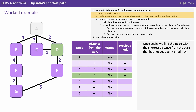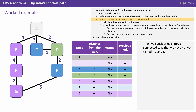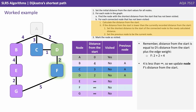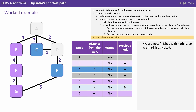Once again we find the node with the shortest distance from the start that's not yet been visited — that's D, with a distance of 2. We consider each node connected to D that's not yet been visited: C and F. Each node's distance from the start equals D's distance plus the edge weight. For C that's 2 plus 1 equals 3 — not less than the recorded distance, so no update required. For F that's 2 plus 2 equals 4, which is less than infinity, so we update F's distance from the start. We now finish with node D and mark it as visited.